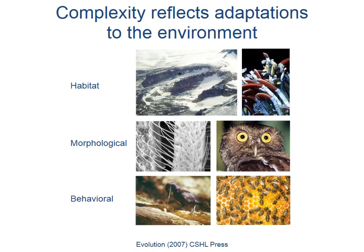The complexity of biological systems reflects adaptations to the environment. This can be the ability to survive in extreme habitats. It can be a morphological adaptation that allows organisms to sense their environment, or it can even be a behavioral adaptation such as the use of tools or the formation of colonies.